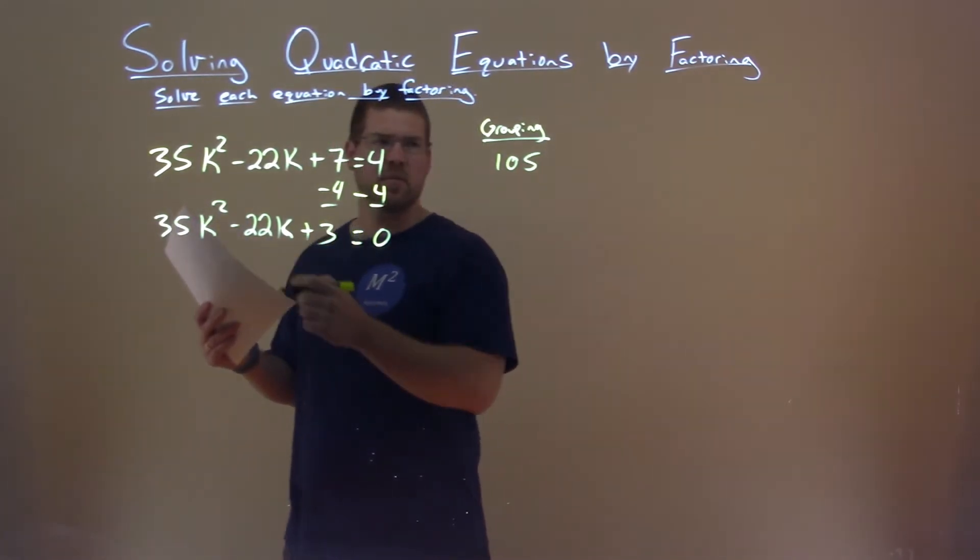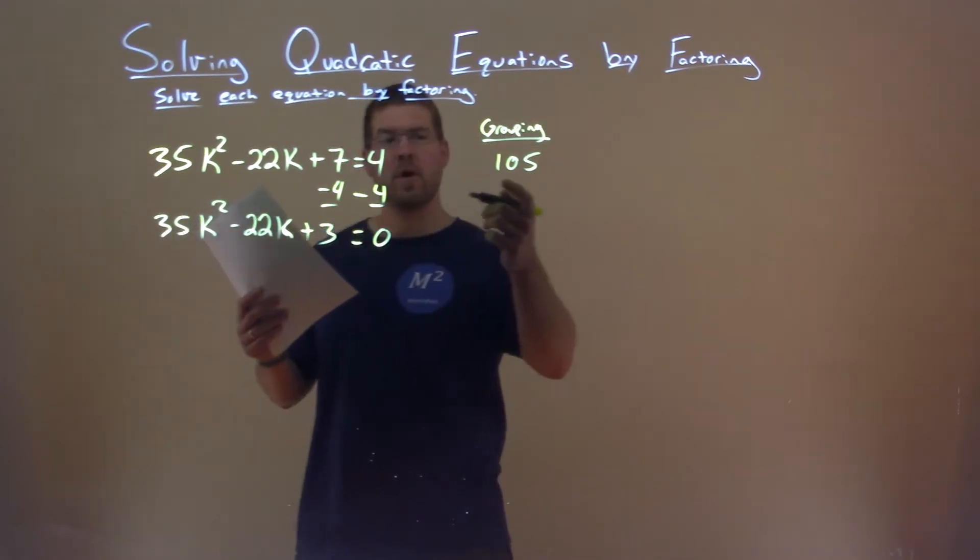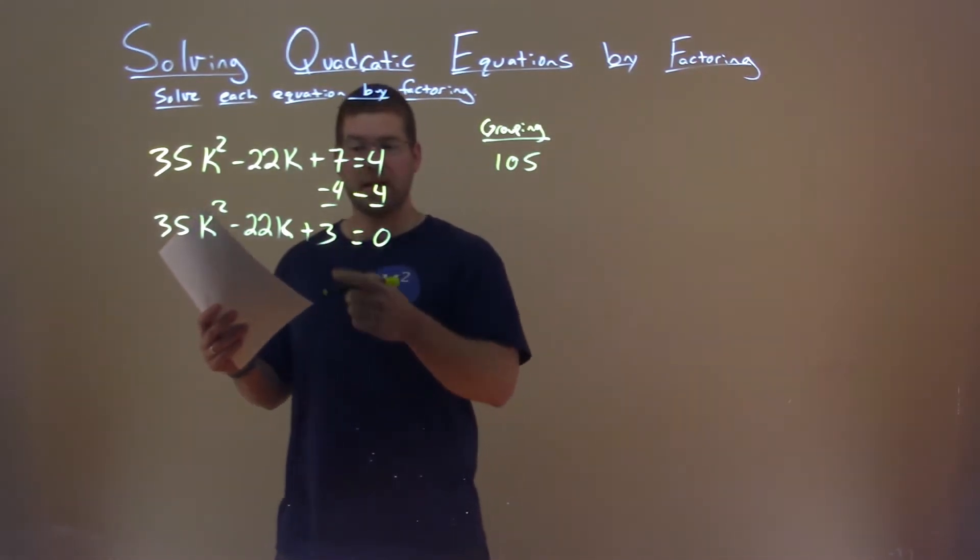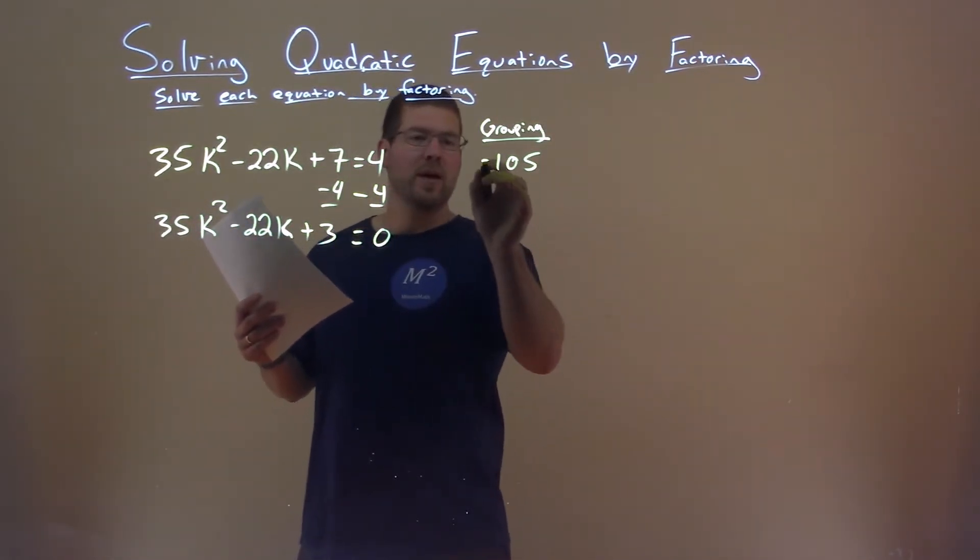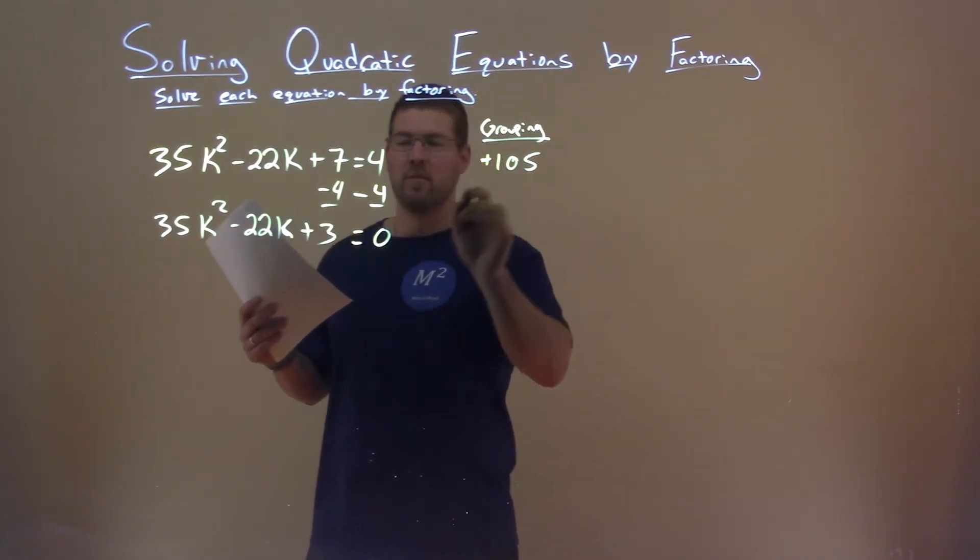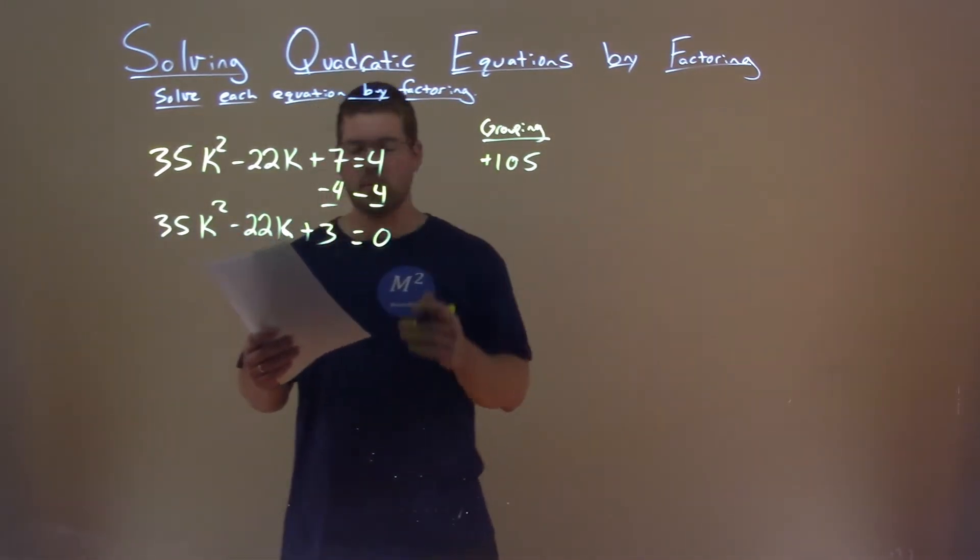And actually, speaking of that negative 22, if the two numbers multiply to be 105 but add to be negative 22, both of our numbers have to be negative. All right, so we have positive 105, negative 22, both will be negative.